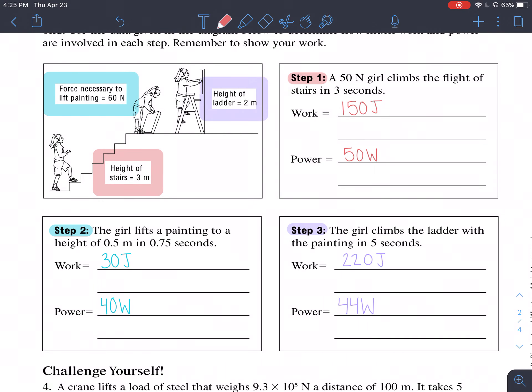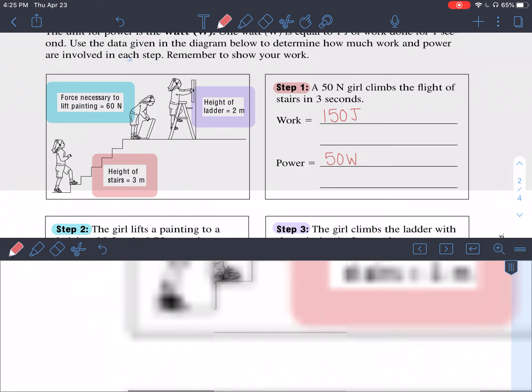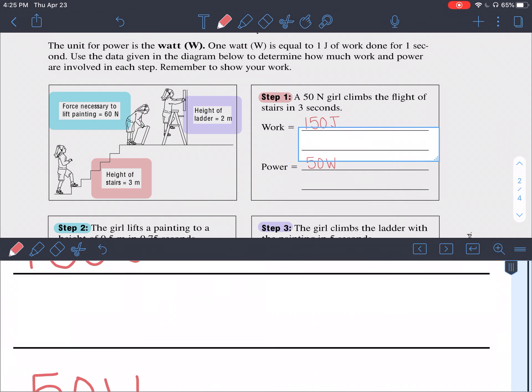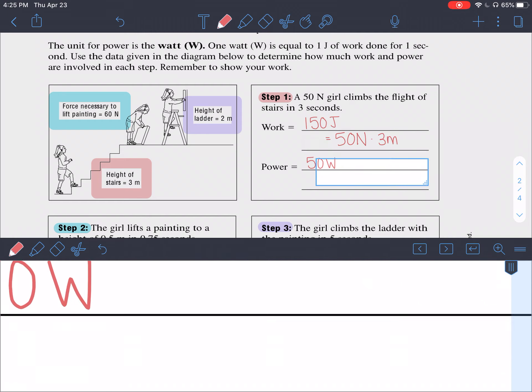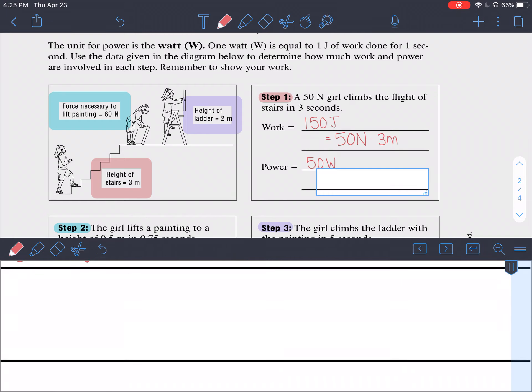Step one, a 50 newton girl climbs the flight of stairs in three seconds. To find out the amount of work that she did, we need to know of course that she was 50 newtons and we need to know the distance or her displacement which is three meters. That's how we get 150. And how do we get 50 watts for the power? Well if we have 150 joules of work and they said that she did it in three seconds, 150 divided by three is 50 watts.